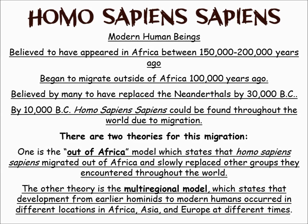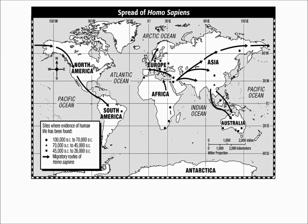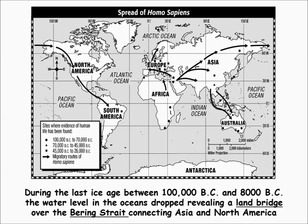Looking at the migration map, humans spread out of Africa. The multi-regional model is not looked upon as favorably by scientists today — most scientists believe we evolved to modern human status in Africa and then spread to other parts of the world, including crossing the Bering Strait where Asia and the Americas meet, and eventually settling in the Americas.